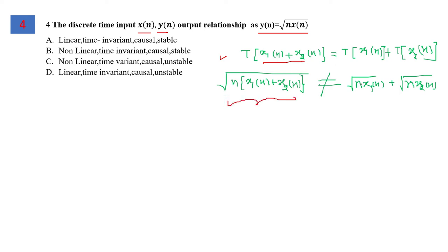When input is x1(n) + x2(n), the output is √(n(x1(n) + x2(n))), but for individual inputs we get √(nx1(n)) + √(nx2(n)). These are not equal, so the system is non-linear. Because of the term n, the system is time variant. The output depends on present input values, so it's causal but unstable. Option C is correct for question 4.